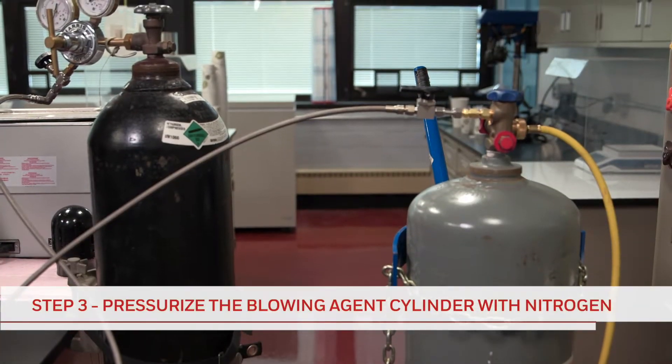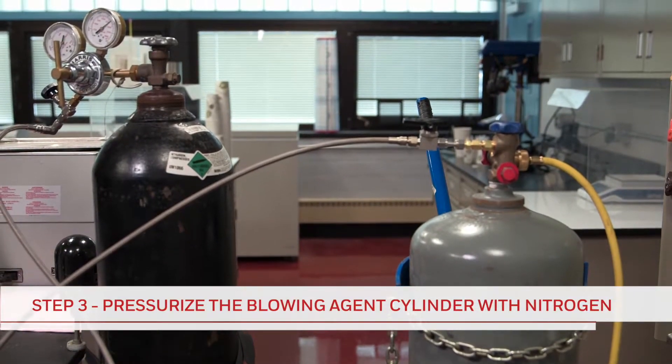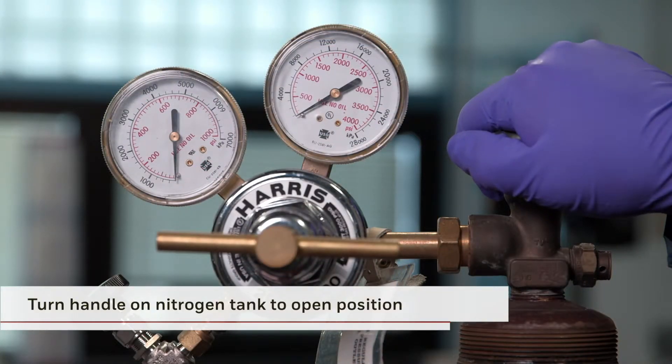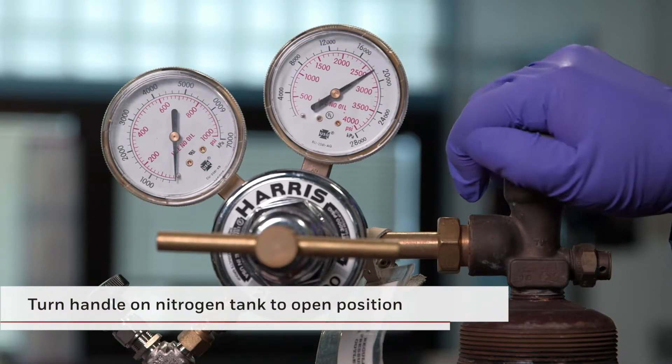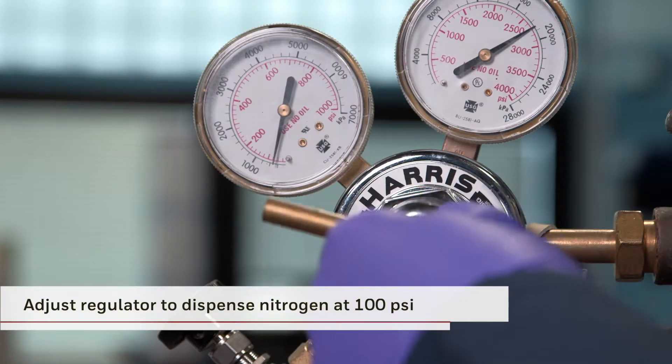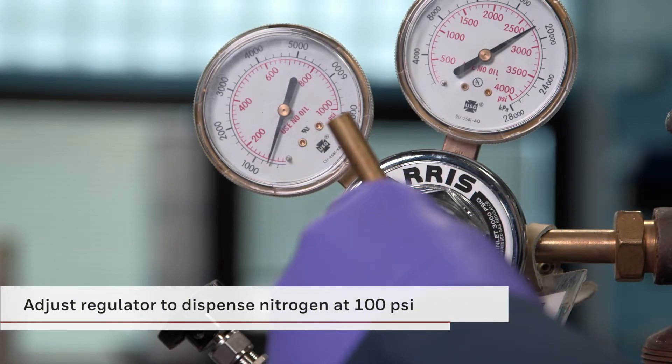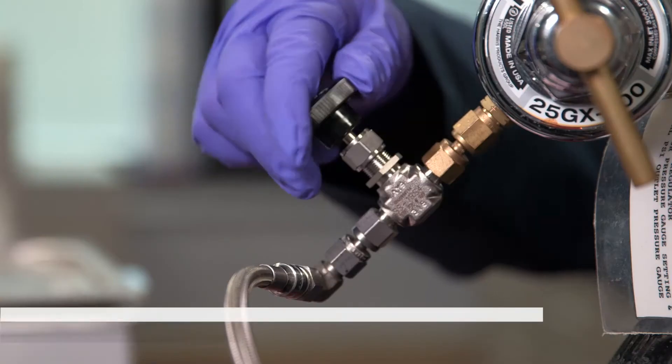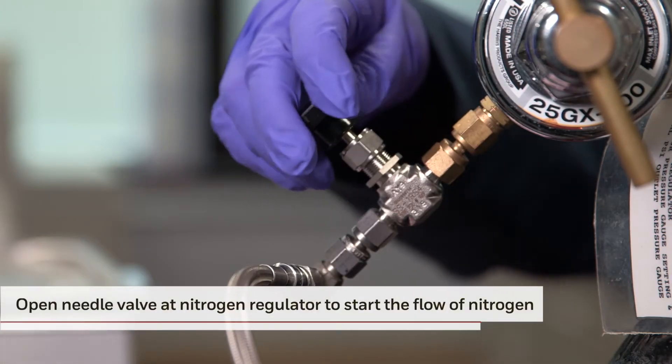Now that the lines are connected, the process of pressurizing the blowing agent cylinder can begin. First, turn the handle on the top of the nitrogen tank to the open position. Adjust the regulator to dispense the nitrogen vapor at 100 psi pressure. Now, open the needle valve at the nitrogen regulator.